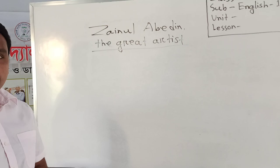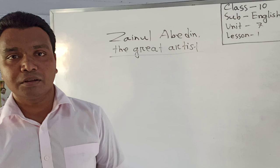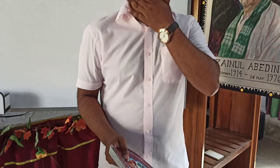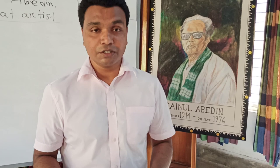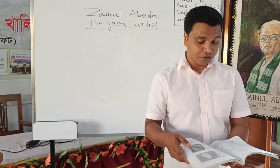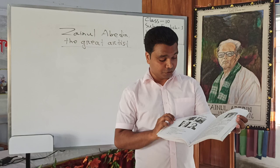The unit is 7 and the lesson number is one. Dear student, let's go to our lesson. The student of class 10, please open your book English for Today and go to page number 91. You can see the unit number 7 and the unit name is 'People Who Stand Out,' and lesson one is about Zainul Abedin, the great artist.